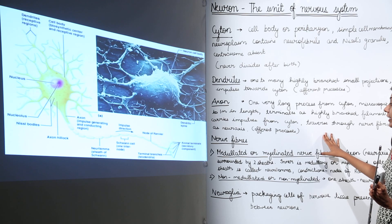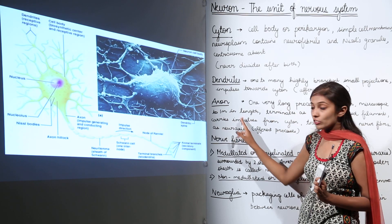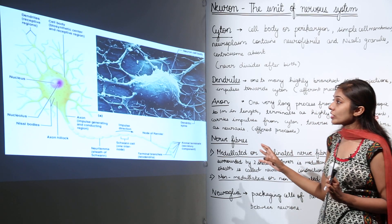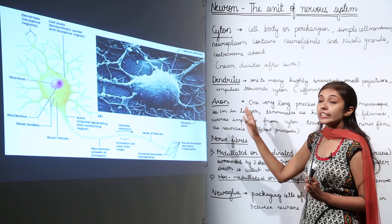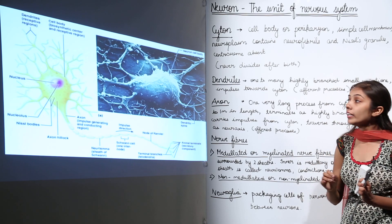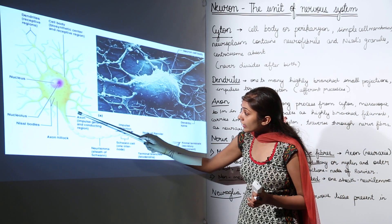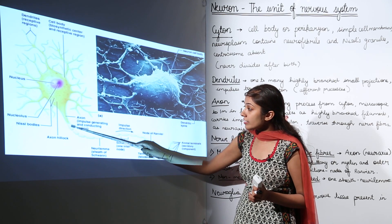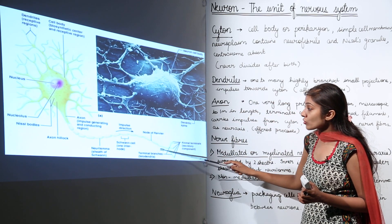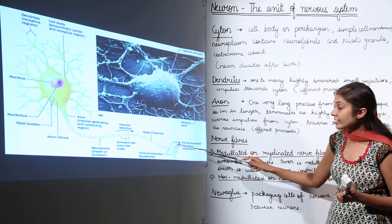The axon is also known as neuraxis. The impulse is generated and conducted along this region, which is why it is called the conducting region.